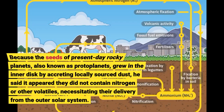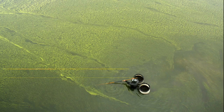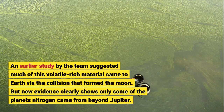Because the seeds of present-day rocky planets, also known as protoplanets, grew in the inner disk by accreting locally sourced dust, he said it appeared they did not contain nitrogen or other volatiles, necessitating their delivery from the outer solar system. An earlier study by the team suggested much of this volatile-rich material came to Earth via the collision that formed the Moon.